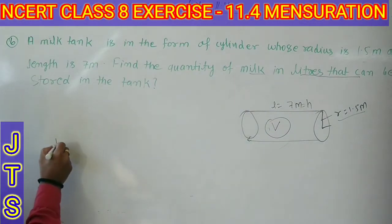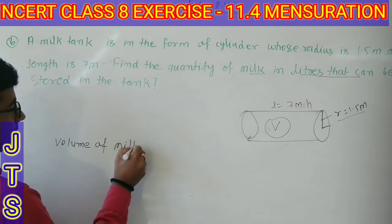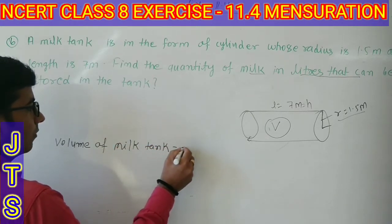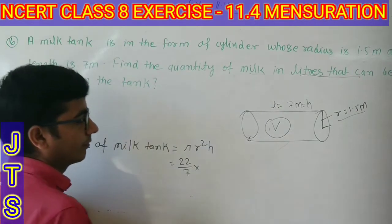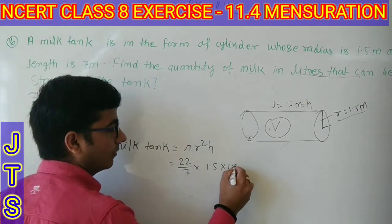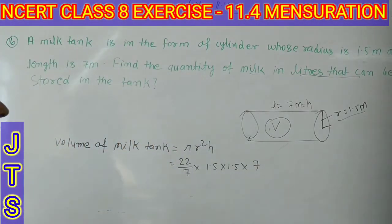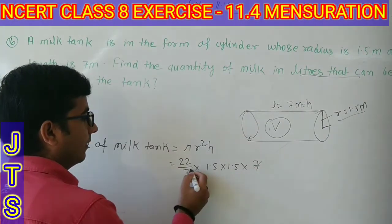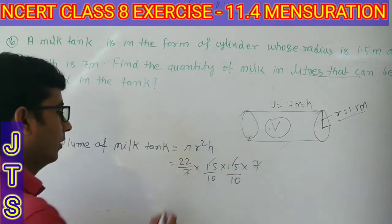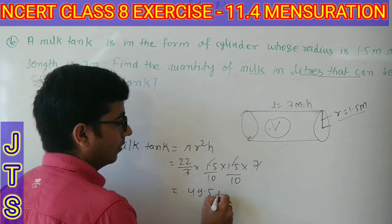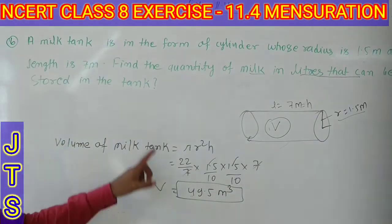Length cylinder का height हो जाएगा। Milk in liters में storage निकालना है, इसलिए volume निकालेंगे। Volume of milk tank = π r² h = 22/7 × 1.5 × 1.5 × 7. 7 और 7 cancel हो जाएगा, तो 22 × 1.5 × 1.5 calculate करेंगे। इससे आएगा 49.5 meter cube।